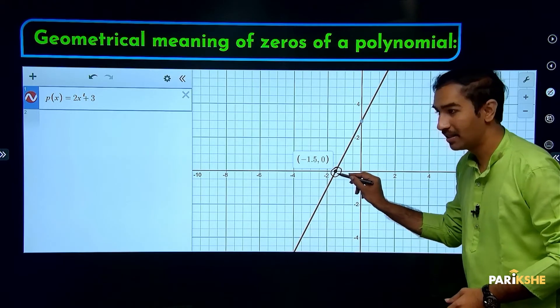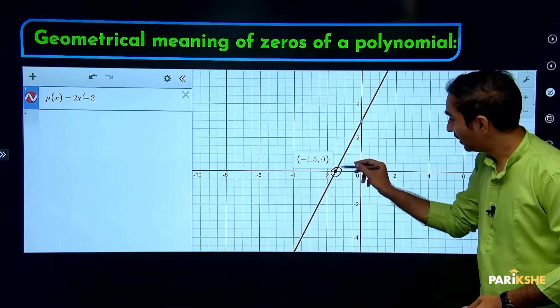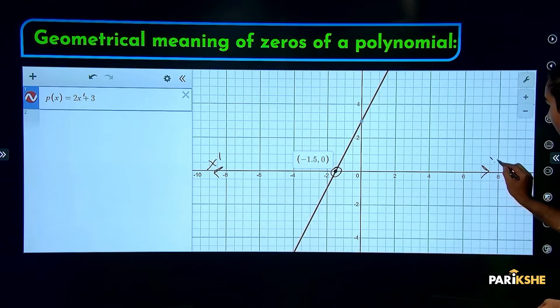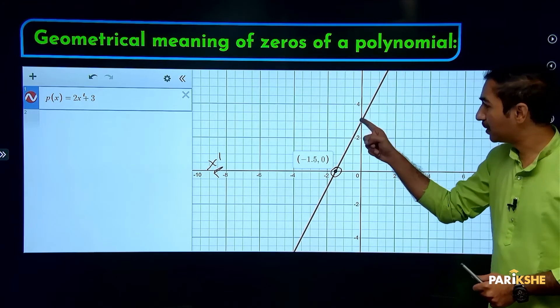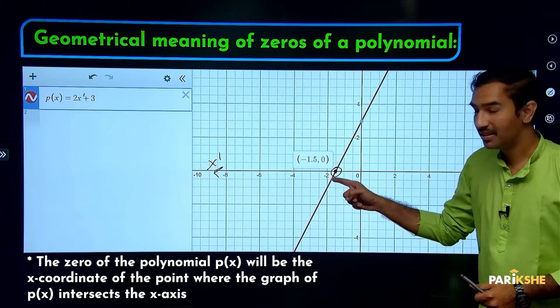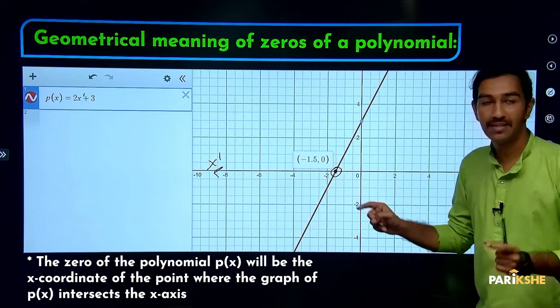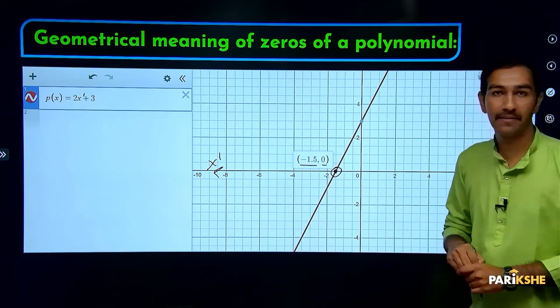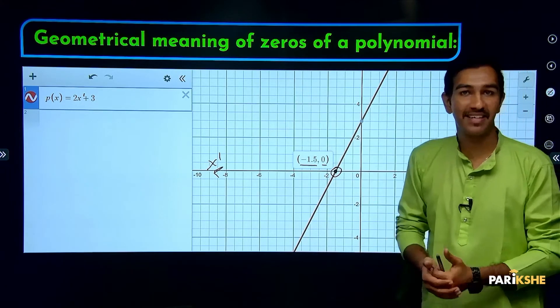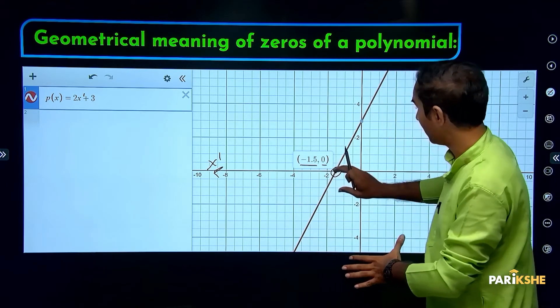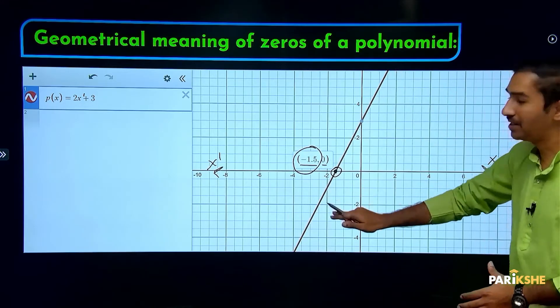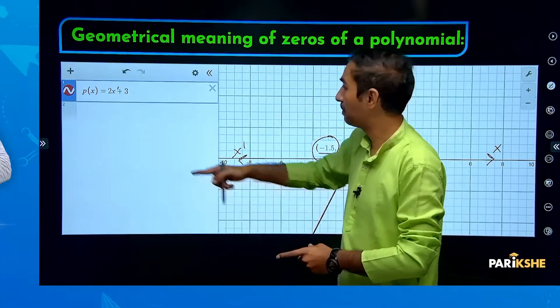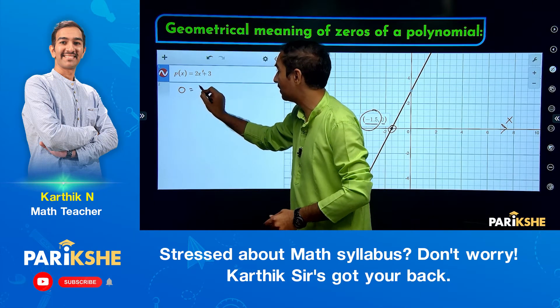The graph has been drawn. When the graph intersects the x-axis, at that point, the y value becomes zero. Look here: when x is minus 1.5, y becomes zero. Y is nothing but p(x). So here, we got this answer geometrically from the graph.